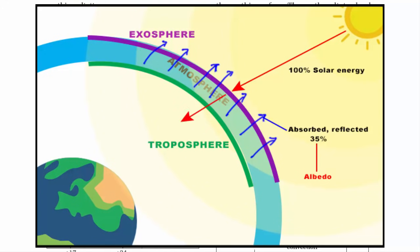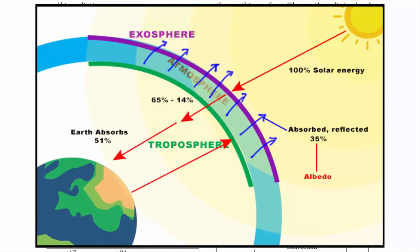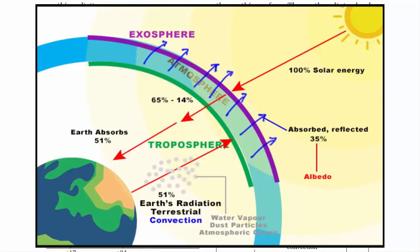The remaining 65% of sun rays enter the atmosphere. Of these, 14% is absorbed within the atmosphere by water vapour, dust particles, and other atmospheric gases. The remaining 51% is actually absorbed by the earth's surface. Now it's time for the earth to radiate back the 51% of heat received — in other words, it's time for terrestrial radiation. The heat travels vertically upward through convection, and 34% of the heat will be absorbed again by the atmosphere — which includes water vapour, dust particles, horizontal air movement, and other atmospheric gases.